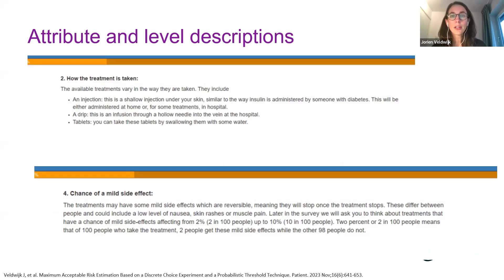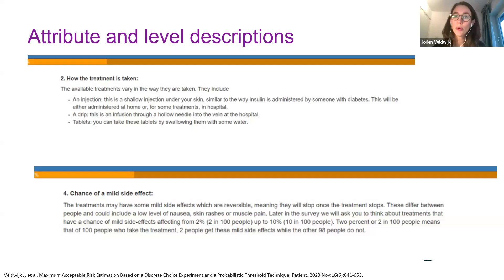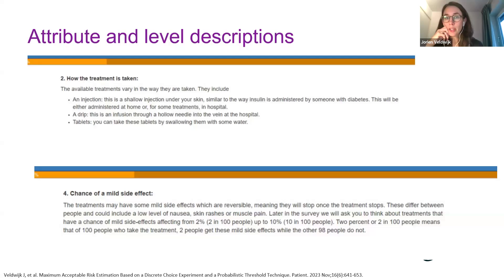Related to attributes and levels, all of them need to be explained and described before respondents answer the choice questions, and preferably using non-technical language. For some attributes, there might already be a clinical definition available or one tested in a previous preference study — that can be very helpful. Reuse of definitions also benefits potential new studies that include a literature review, meta-analysis, or any form of benefit transfer.